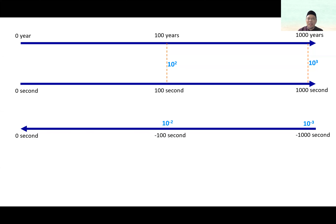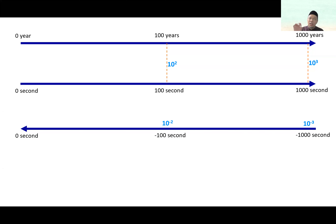That is actually the micro parts of a second — I hope we can get the picture. Because we are going to talk about various slices of time: 10 to the power of minus 2, 10 to the power of minus 3, and so forth. We are going to use exponential figures when we talk about the Big Bang, from the smallest to the biggest.